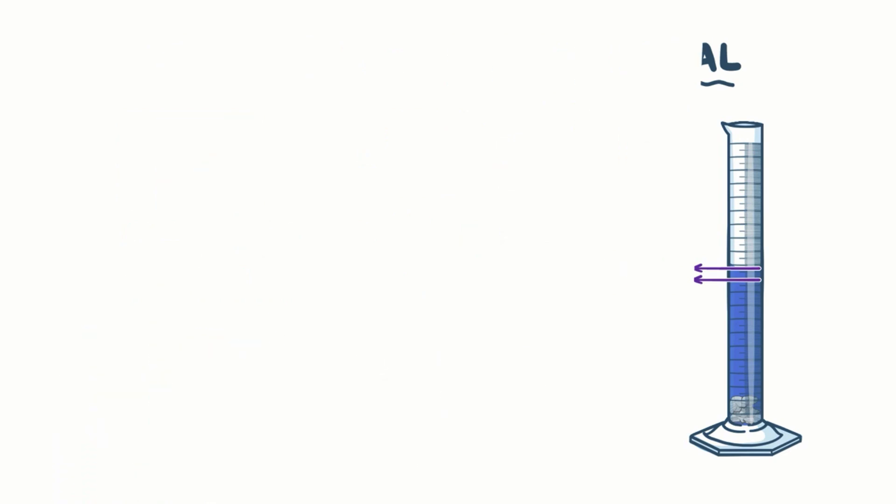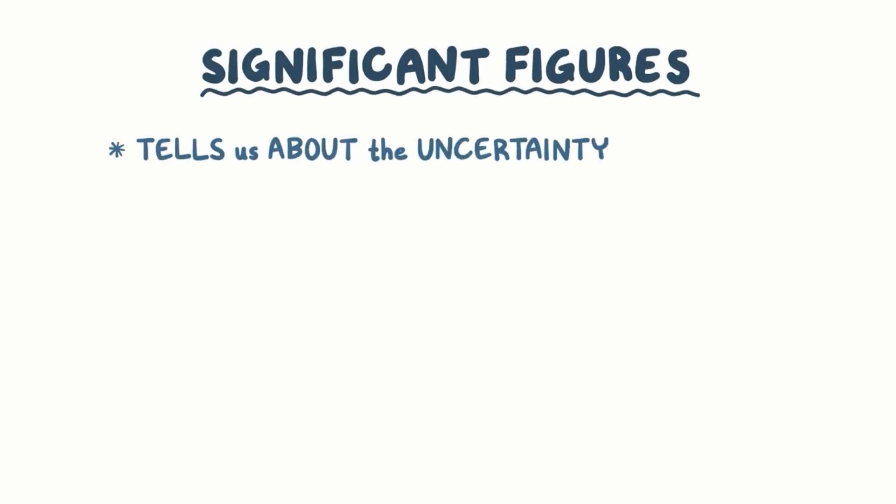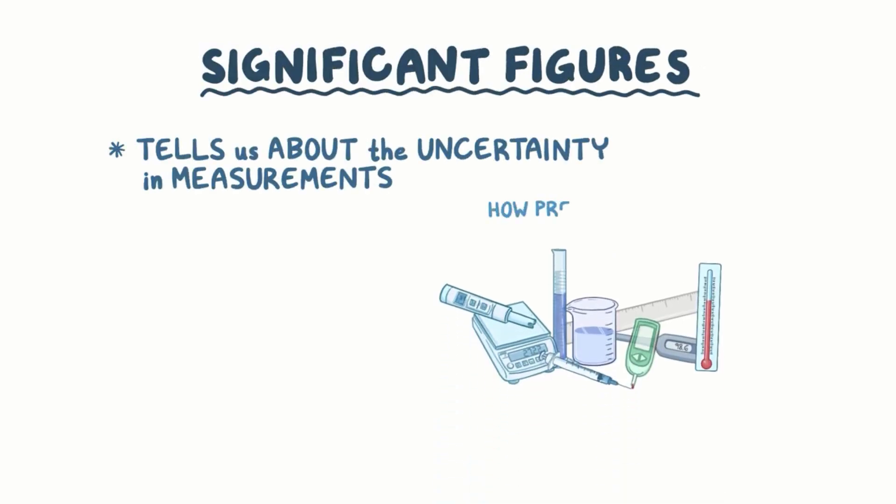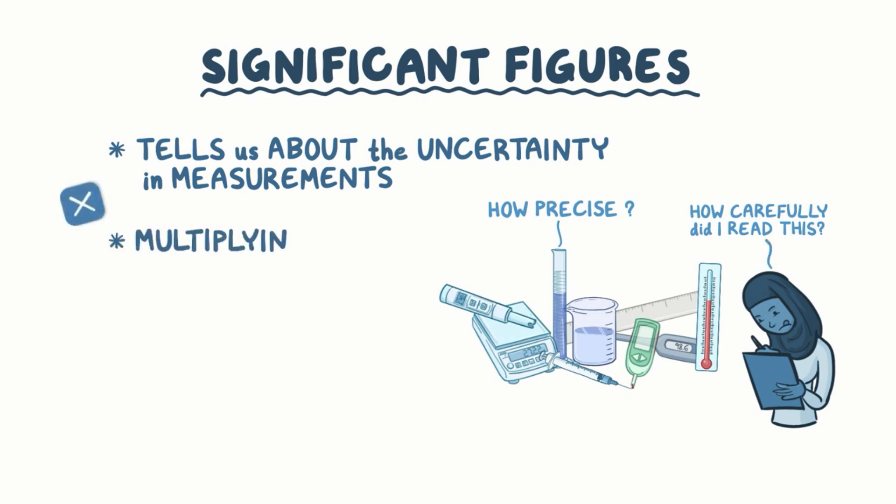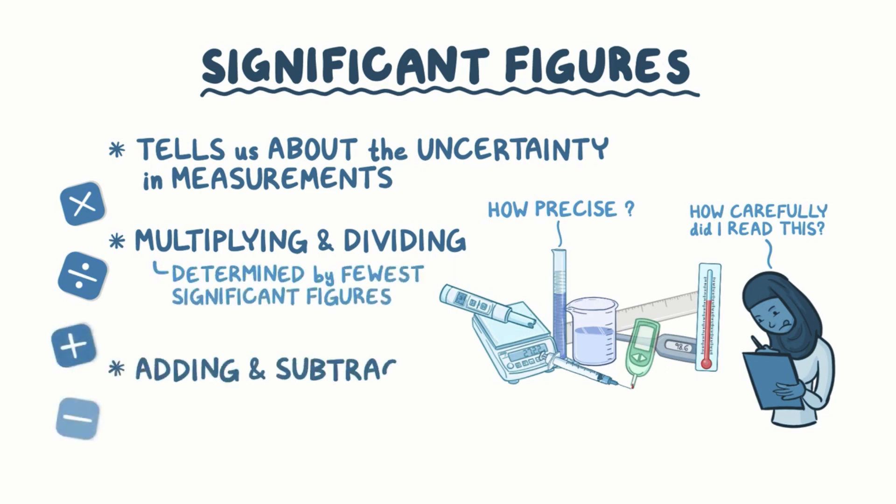Alright, as a quick recap. Significant figures tell us about the uncertainty inherent in any measurement. They are affected by how precise our measuring devices are, as well as how carefully we read measurements from our measurement devices. When combining measurements using multiplication and division, like when we measure density, we determine the significant figures of our results using whichever of our measurements has the fewest significant figures. When adding or subtracting measurements, we determine the significant figures of our result by tracking the decimal places of the significant figures in our measurements. This method ensures that the number of significant figures in the final answer has a precision that reflects the precision of the original measurements.